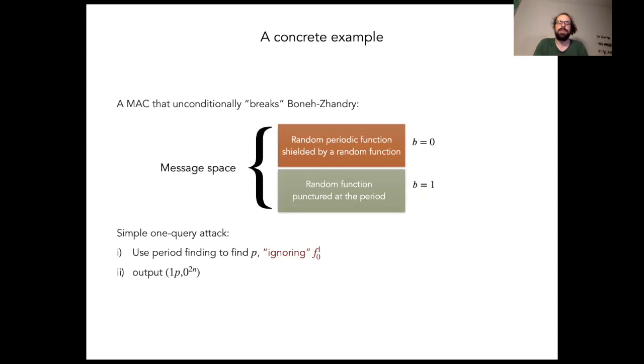There's a simple one query convincing forgery attack. Works as follows. First, use the period finding algorithm to find the period P. This is done by ignoring the uniformly random part of the output. And then just output the message one P together with the all zero tag.